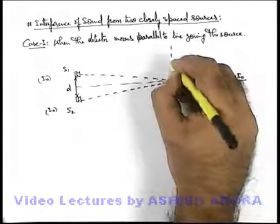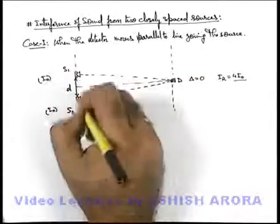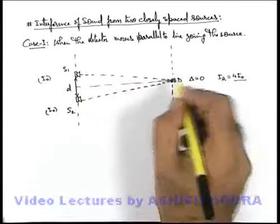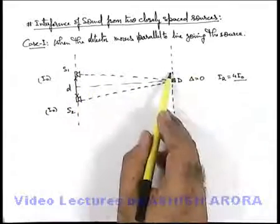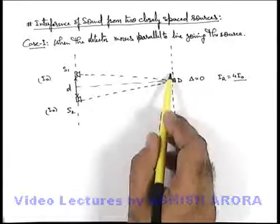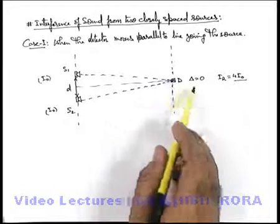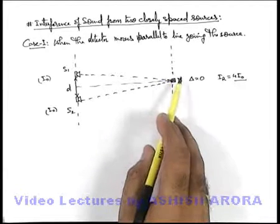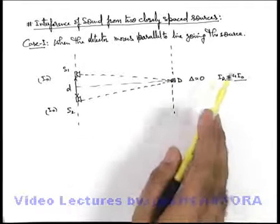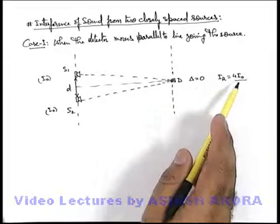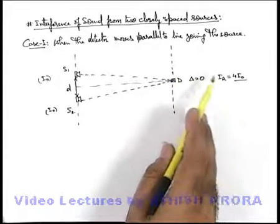Now, say if the detector starts moving along a line which is parallel to the line joining the sources, then obviously if the detector moves slightly, the path length from source S1 will slightly decrease and that from S2 will increase. So a path difference is created, and correspondingly there will be a phase difference. Hence the intensity will certainly be less than 4I₀ — as the detector starts moving, the intensity will gradually drop.